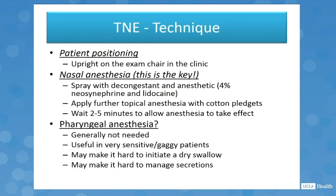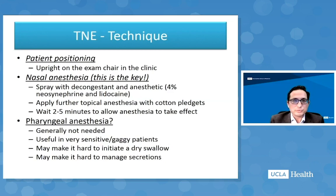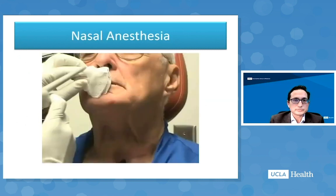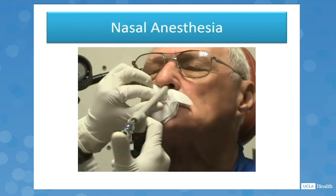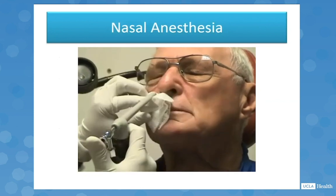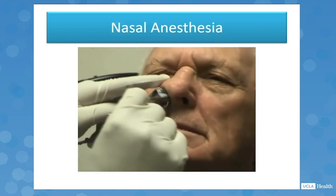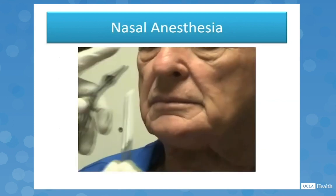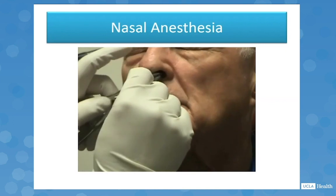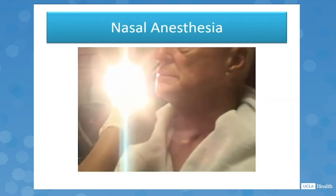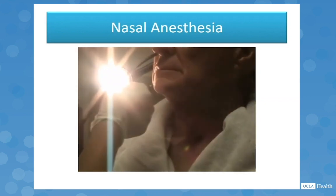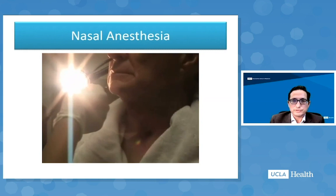However, giving anesthesia to the pharynx can make it hard to initiate a dry swallow and hard to manage secretions, so we have to be ready to suction secretions — particularly in a patient with a significant swallowing disorder. The nasal anesthesia technique uses 4% neosynephrine and lidocaine spray, followed by cotton pledgets placed in the nasal cavity. I check which nasal cavity is more open and apply the medication to that side, then proceed about two to five minutes later.